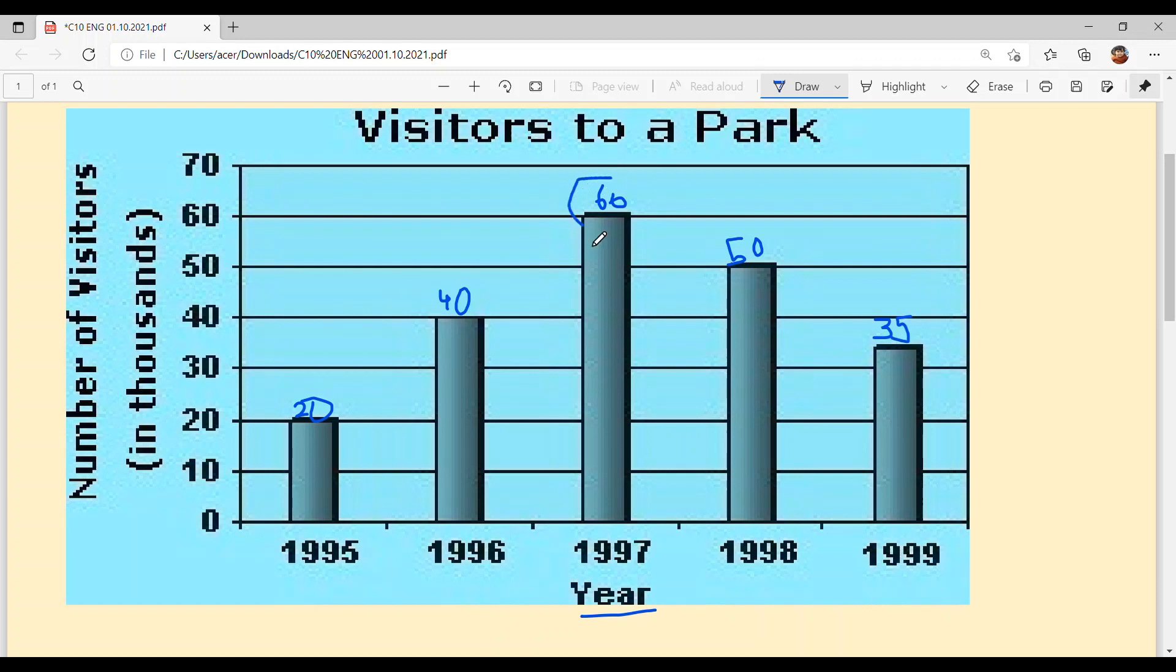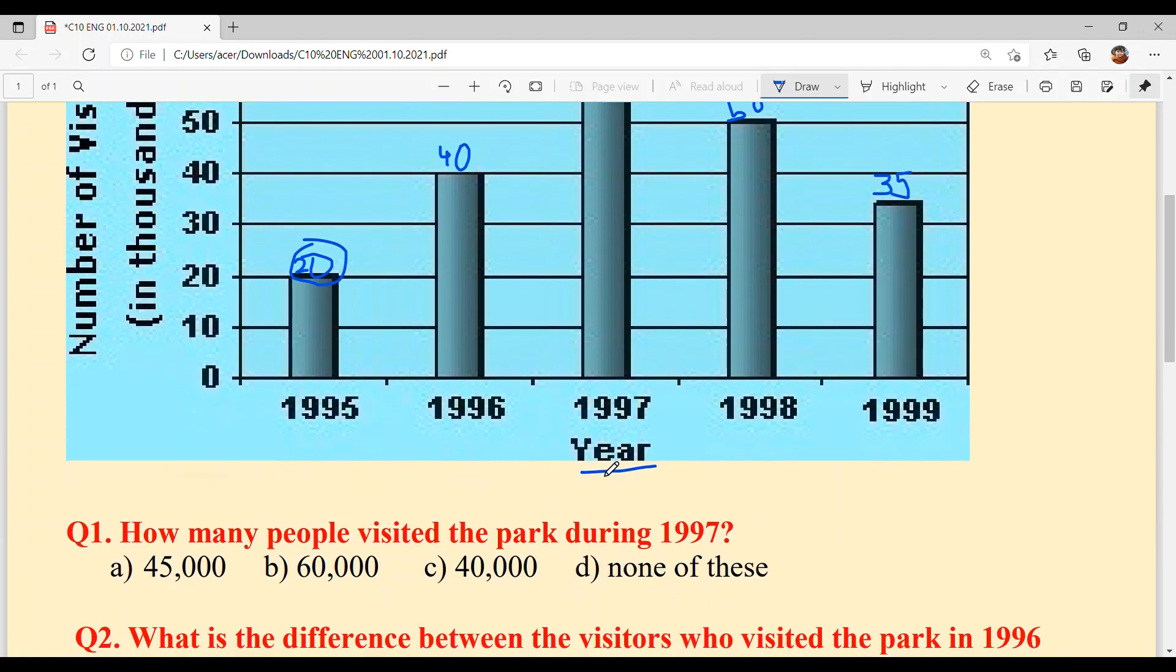The highest is 60, the lowest is 20, and we have 35, 40, and 50. This is easy, not a tough bar graph. Let's understand it well. So, let's solve our questions.